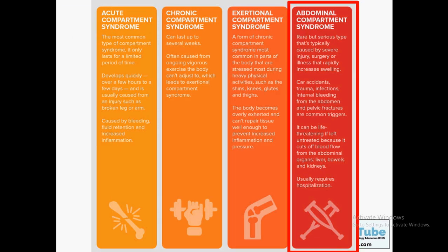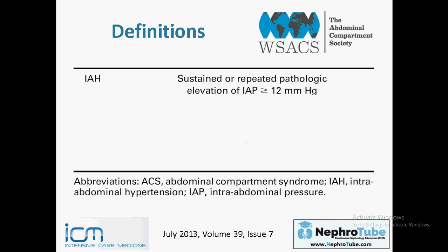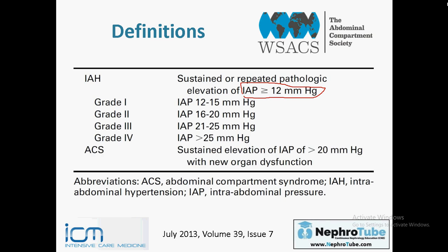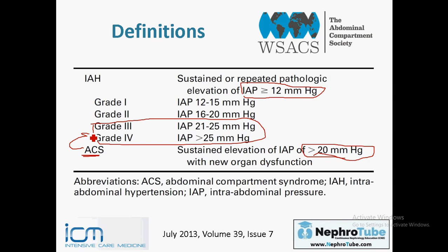The second part of our lecture is abdominal compartment syndrome — increased abdominal pressure. We have two definitions: intra-abdominal hypertension and abdominal compartment syndrome. Intra-abdominal hypertension is defined when the intra-abdominal pressure is more than 12 mmHg. Abdominal compartment syndrome is considered when intra-abdominal pressure is more than 20 mmHg. Acute compartment syndrome is a part of intra-abdominal hypertension starting from grade 3.